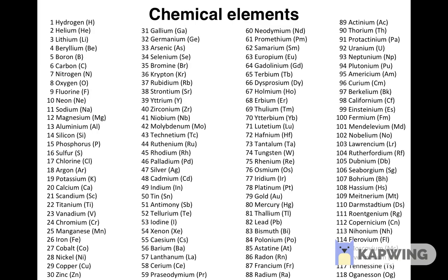How atoms can connect with other atoms to form all ordinary matter around us is determined by how electrons in them are distributed among orbitals. The distribution of electrons among orbitals is called the electron configuration of an atom. The electron configuration of an atom can be determined using three rules.